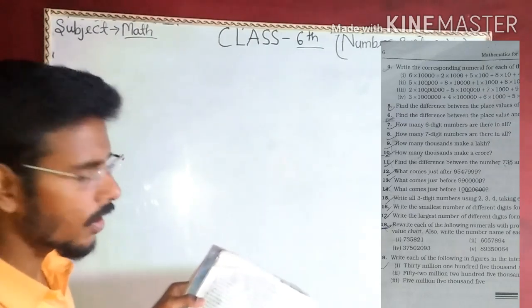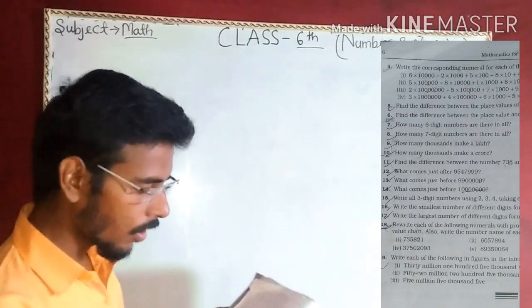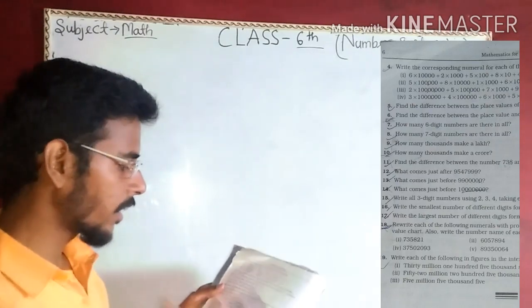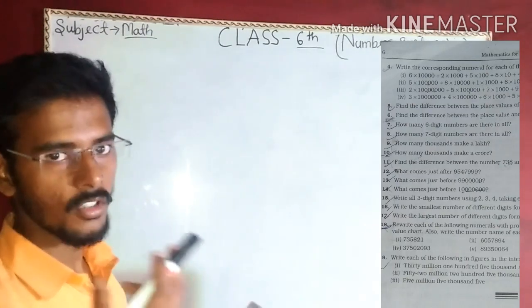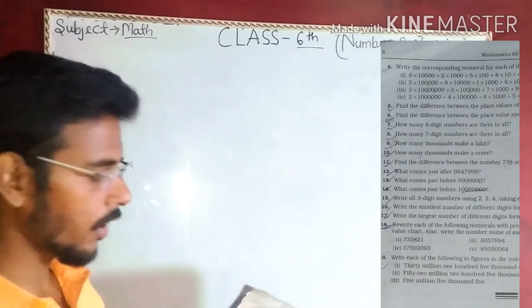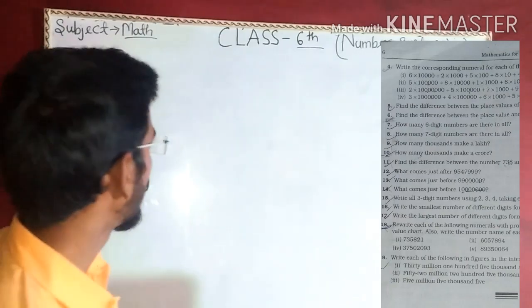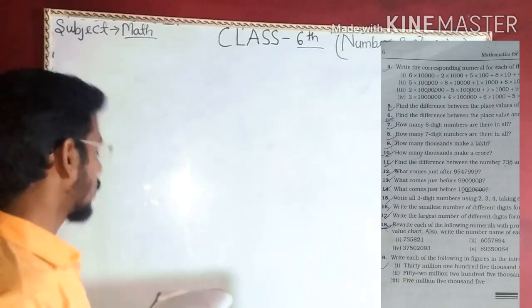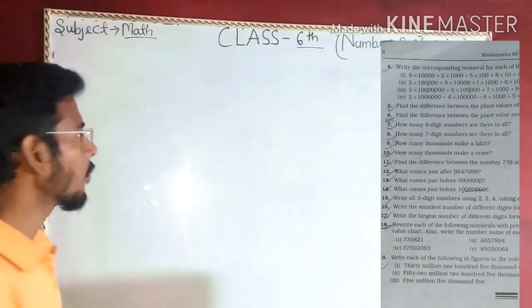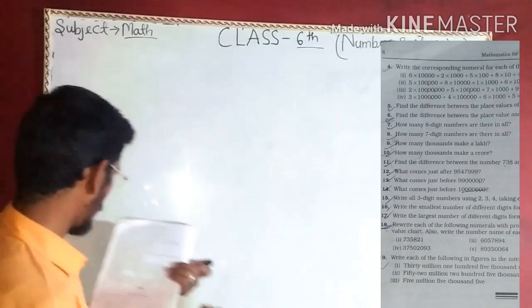Question number 11: Find the difference between the number 738 and that obtained on reversing its digits. The given number is 738.